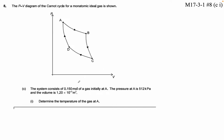The system consists of 0.15 moles of gas initially at A. So n is 0.150. The pressure at A is 512 kilopascals, that's times 10 to the third pascals. And the volume is 1.2 times 10 to the minus third cubic meters.